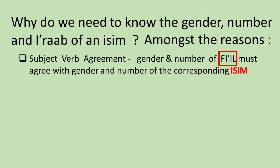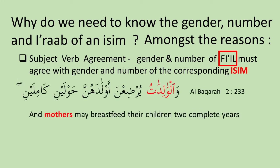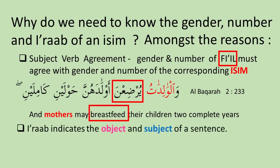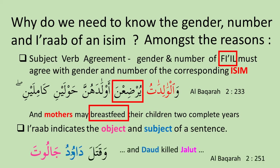In fact, the rules are even more stringent in Arabic. For example, al-walidatu means mothers — it's an isim jama' mu'annas salim, a feminine plural. The verb used must be compatible with jama' mu'annas salim too, so the verb used is yurdi'na. I'rab is used to make sense of a string of words in a sentence — it tells you the role a particular word plays, be it as an object, subject, adjective, or to show possession. For example, the dammah at the end of Dawud and the fathah at the end of Jalut enables us to translate the sentence correctly.